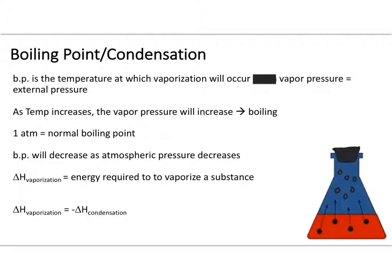One atmosphere is the standard for normal boiling point. However, if you change the atmospheric pressure, you also change the boiling point. For example, at high altitude like Mount Everest, the lower atmospheric pressure decreases the boiling point of water — it boils at a temperature lower than at sea level. This affects cooking times at high altitude.